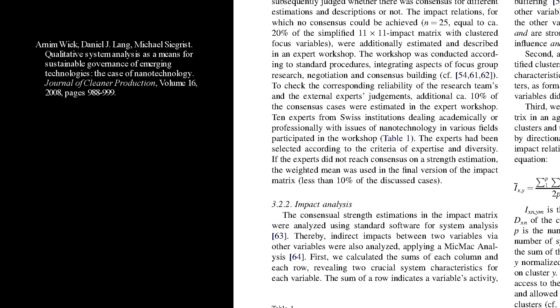In this example, before showing the table of experts, the text explains: 'To check the corresponding reliability of the research teams and expert judgment, circa 10% of the consensus cases were estimated in the expert workshop. Experts from Swiss institutions dealing academically with issues of nanotechnology in various fields participated in the workshop — Table 1.' That is how we introduce the table by name. The table then shows the experts, their institutions, and their areas of expertise. The introduction can appear in parentheses after the sentence or be written out — both are acceptable.